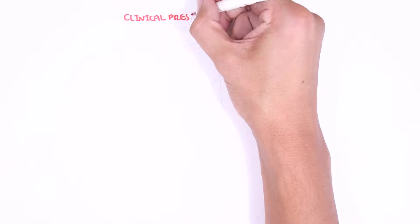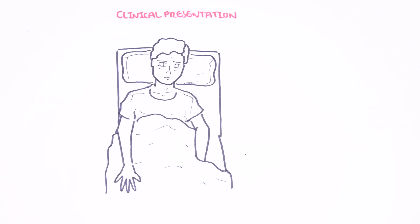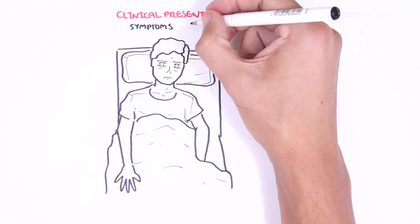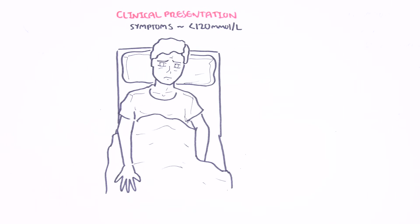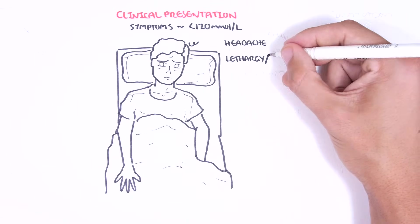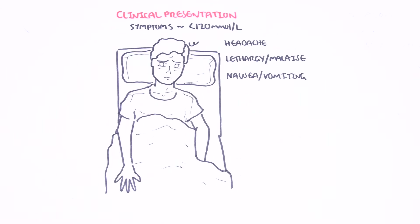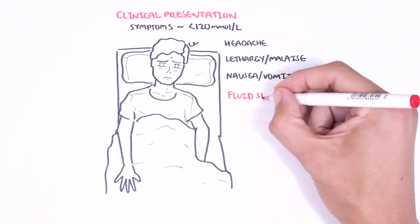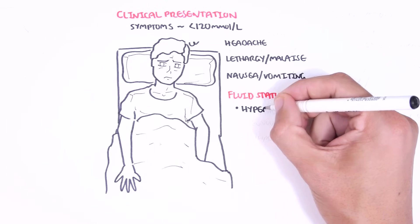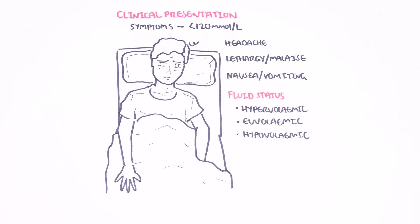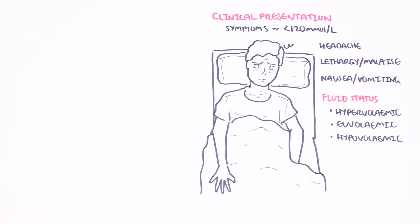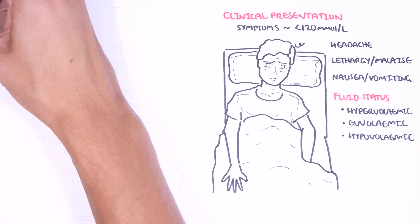The clinical presentation of hyponatremia often doesn't appear until sodium is less than 120 mmol per liter, though by definition it is less than 130 mmol per liter. Symptoms generally include headaches, lethargy, malaise, and nausea and vomiting in those who develop hyponatremia slowly. The clinical presentation also usually includes changes in fluid status — hypervolemic, euvolemic, or hypovolemic — which is very important to assess.